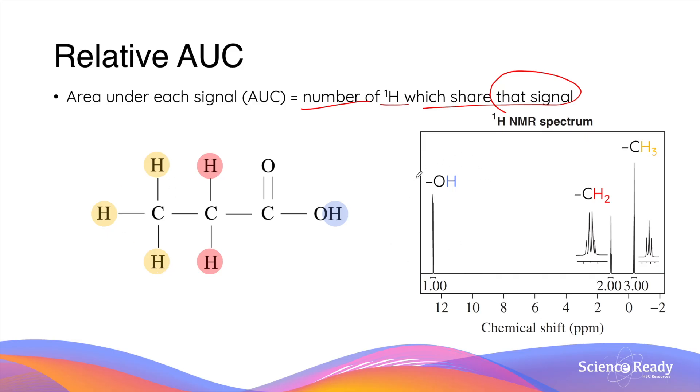The first signal on the far left-hand side is produced by the first proton that's attached to the oxygen. The second signal is produced by the two protons on the second carbon atom. The third signal is produced by the three protons in the third carbon atom.